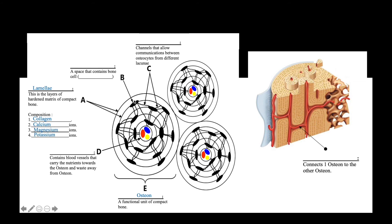B refers to spaces in the hardened matrix called lacunae, which contain bone cells known as osteocytes. Osteocytes in one lacuna communicate with those in adjacent lacunae via C, known as canaliculi. All cells in the lacunae receive nutrients from blood vessels in D, the Haversian canal, which also removes waste from the osteon. Adjacent osteons are connected via Volkmann's canal.